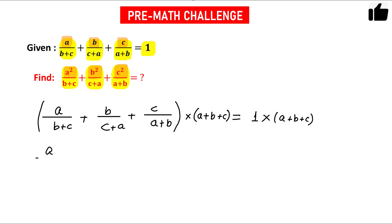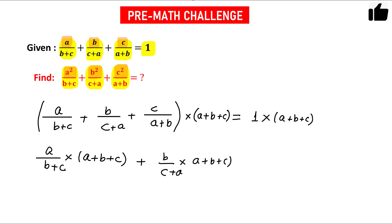Now let us multiply each term separately. We will have a/(b+c) times (a+b+c), and the second term will be b/(c+a) times (a+b+c), and the third term will be c/(a+b) times (a+b+c), and this equals a+b+c.